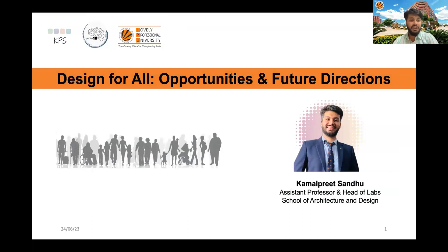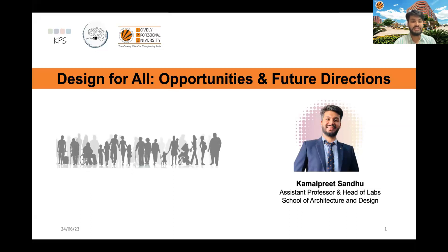Before going ahead, I would like to share with you the picture on the left side of this screen. You can see in this picture the diversity of people — children, elder people, younger people, and people with disabilities. So basically, today we are going to discuss design for all, and we have to consider all these people while considering their needs in our design to make a valuable solution for society.